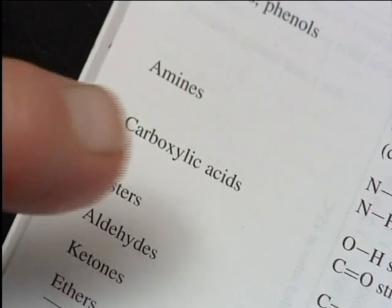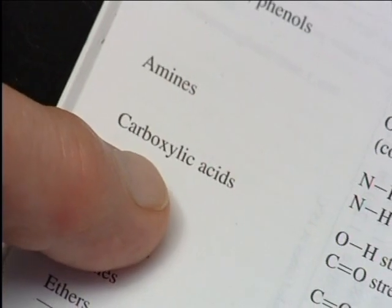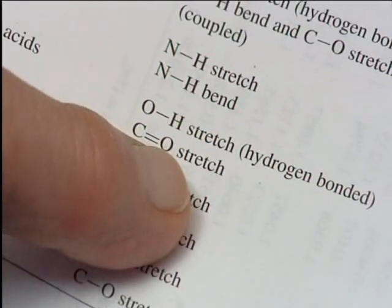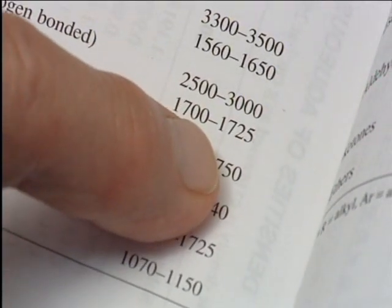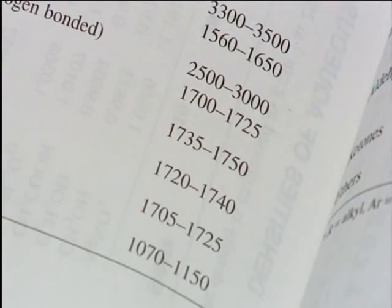For historical reasons, and because the numbers are easy to work with, chemists dealing with IR spectra use units called wave numbers, measured in centimeters to the minus one, which are proportional to frequency.